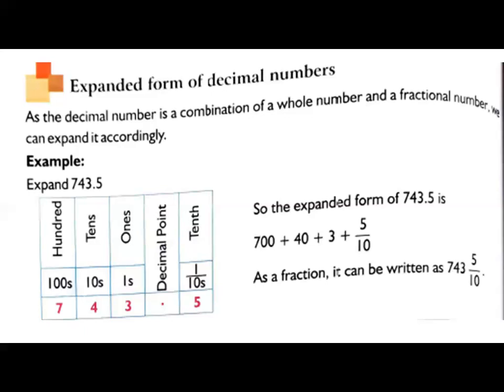Now after expanding, you can add the place value terms. So 700 plus 40 plus 3 is 743, 5 by 10. So we can write it as in mixed fraction also. So this is how you have to expand a decimal number.